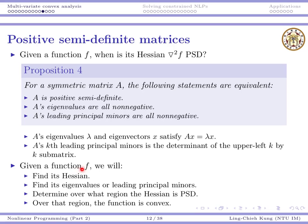What we need to do is: given a function, first calculate its Hessian by collecting all the second-order derivatives. Then either find all its eigenvalues or all the leading principal minors. With them, we can show whether A is positive semi-definite, or determine a region over which the Hessian matrix is positive semi-definite. Over that region, the function is convex. This statement is an if-and-only-if, so if the Hessian is not positive semi-definite at a point, the function is not convex at that point.